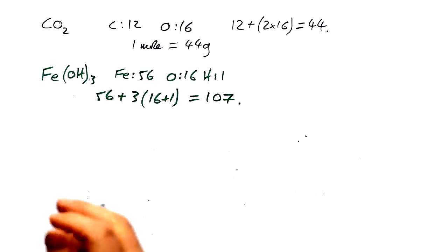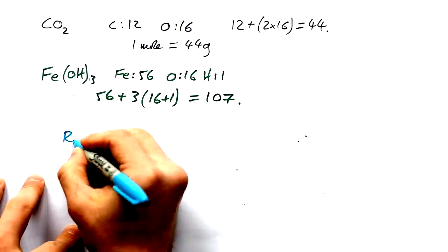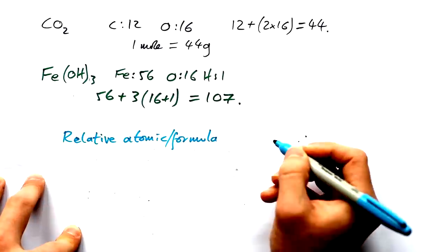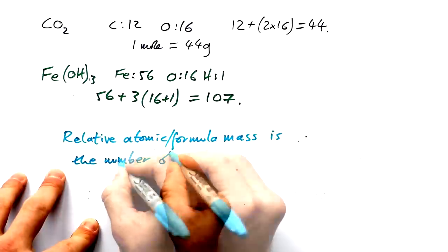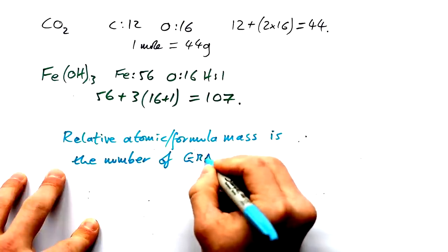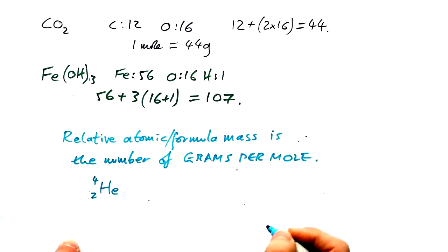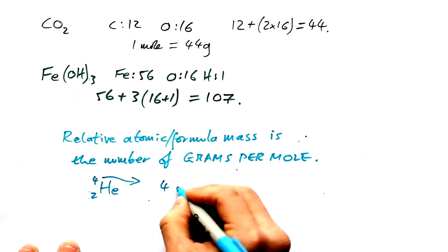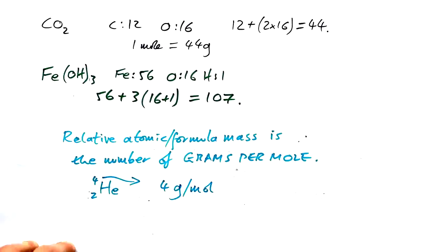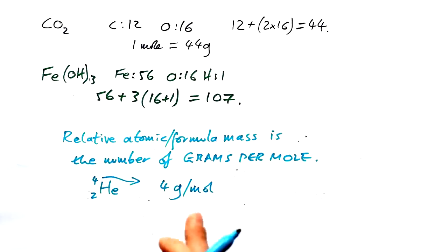Now, some people say that relative atomic mass or relative formula mass doesn't have a unit because it's relative, but lots of things are relative and they have units. Relative atomic mass or formula mass, depending on whether it's just individual atoms or compounds, the number of grams per mole. So when you have helium, this mass number is four, this here is four grams per mole. And we can just shorten moles to mol. It doesn't stand for molecule, that's moles. So that's what the big number next to elements represent. It tells you how many grams a mole, that's 6.02 times 10 to the 23 particles would weigh, as it were.